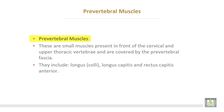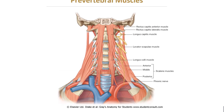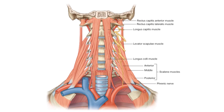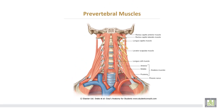Pre-vertebral muscles are small muscles present in front of the cervical and upper thoracic vertebrae, covered by pre-vertebral fascia. They include longus colli, longus capitis, and rectus capitis anterior.